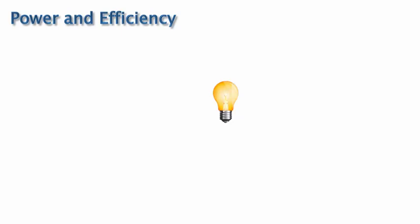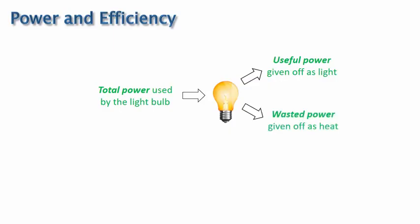To produce light, the light bulb will use a certain amount of power. Some of this power will go into the emitted light of the bulb, which is the intended purpose of the light bulb, so I've called it useful power. And some of it will go into heat, which is not the intended purpose of the light bulb, though it's unavoidable, so I've called it wasted power.